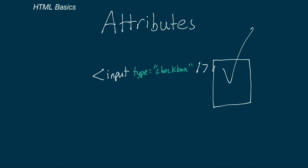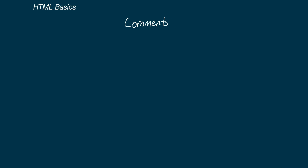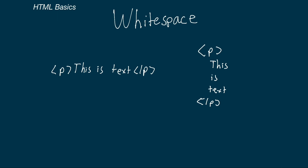Now let's look at a complete HTML file. The first line of every HTML file is the doctype declaration: less-than, exclamation point, the word DOCTYPE, and then HTML with a closing angle bracket. This tells the browser we want to use the most modern version of HTML. Next, we open the HTML tag, which is the root of the document containing all other elements. The HTML tag always contains two tags: the head and the body. The head holds metadata about the webpage — information not shown on the page but important to the browser. The body contains all elements that display on the page.